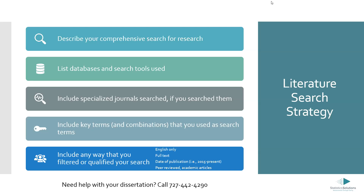If you do include this section, you will be describing your comprehensive search for research. What databases did you use? JSTOR, Academic Search Complete — what specific databases did you look at? What search tools did you use? Did you go from your university library's website, through Google, through Google Scholar? How did you find the articles, the books, any news resources you may or may not be using? Talk about any specialized journals that you searched — maybe there's a particular journal devoted to issues related to your topic, and you searched through multiple issues.